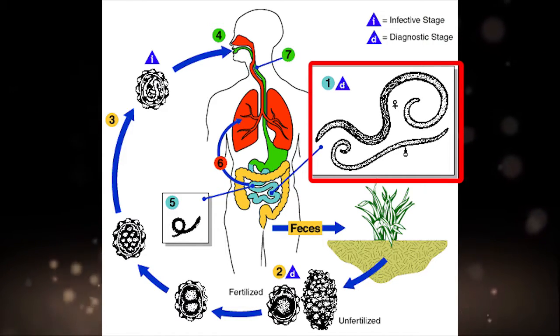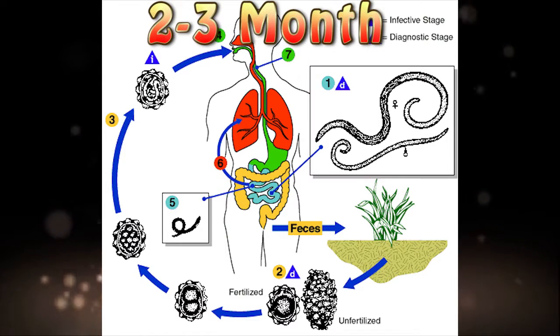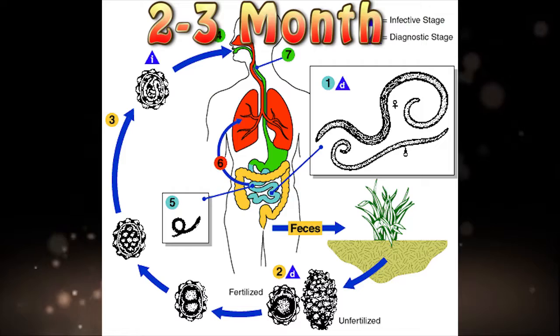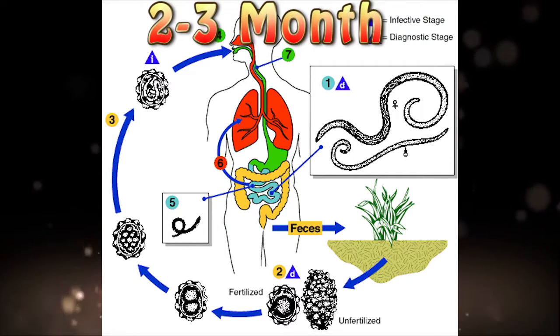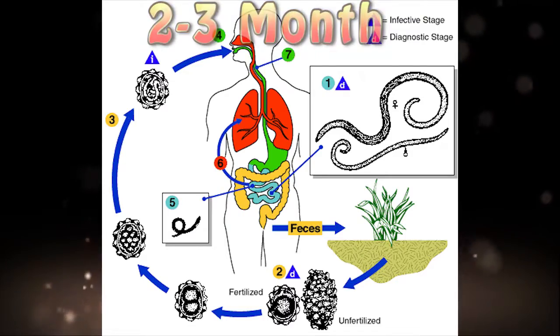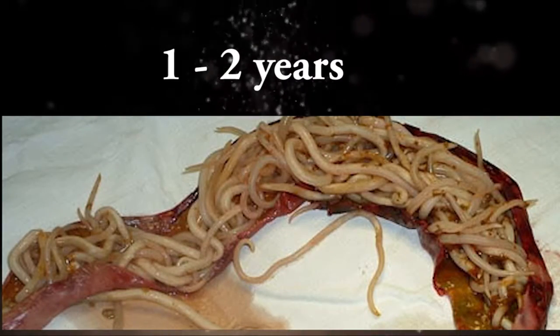They develop into adult forms. Between 2 and 3 months are required from ingestion of the infective eggs to egg production by the adult female. Adult forms can live 1 to 2 years.